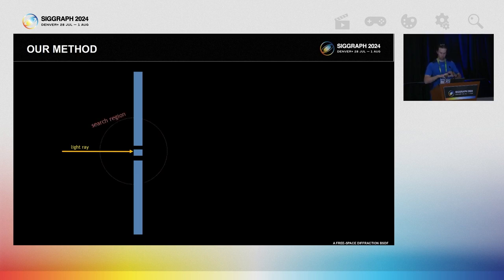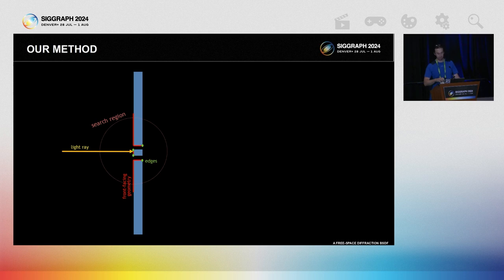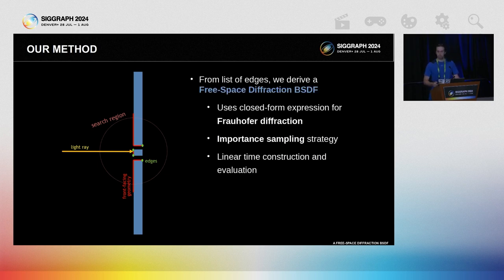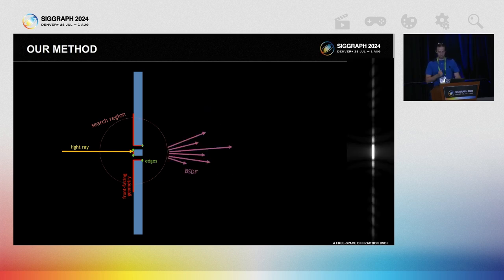This is how it looks in practice: say a ray intersects with a screen — we access the accelerating data structure and look around for triangles, find all the front-facing triangles, and from these front-facing triangles we find all the edges that only belong to a single front-facing triangle — that is, the edges that form the silhouette of the object from light's perspective. From the list of edges we can construct, using our method, a free space diffraction BSDF. Construction, evaluation, and importance sampling are all linear in triangle or edge count, which is often not too bad. The primary cost is going into the accelerating data structure and searching for triangles.